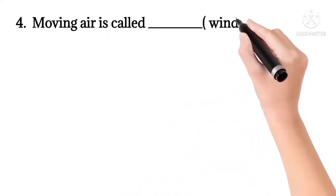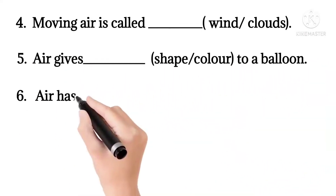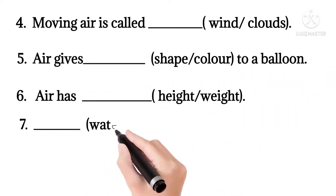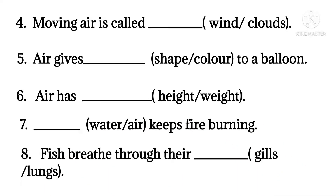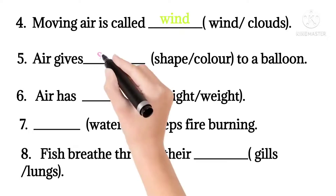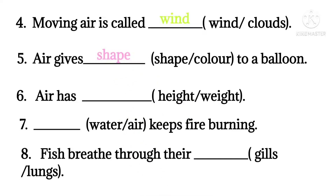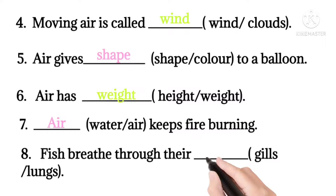Question 4: Moving air is called wind or clouds. Correct answer: wind. When air moves, we can feel the air. Question 5: Air gives shape or color to a balloon. Air gives shape to a balloon. Question 6: Air has height or weight. Correct answer: air has weight. Question 7: Water or air keeps fire burning. Air keeps fire burning.